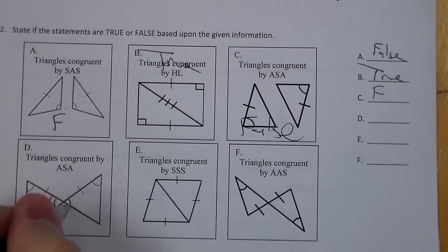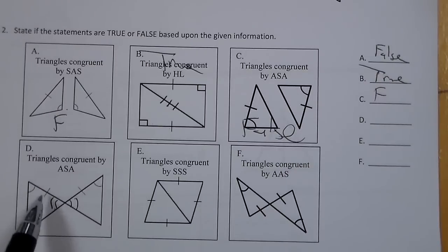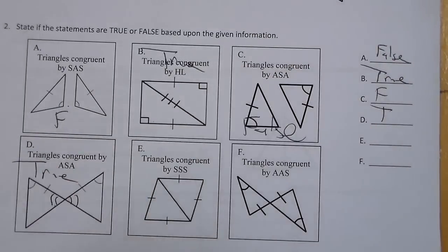D, though, I have vertical angles here that I can mark. Now with what I was already given, I have two sets of angles and the side between. So this one is going to be True, is going to be Angle-Side-Angle.